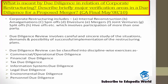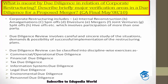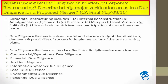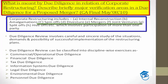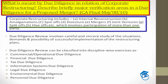Due diligence review involves a careful and sincere study of situations that determine the possibility of successful implementation of any restructuring plan. Corporate restructuring includes: internal reconstruction — where the company wants to reconstruct its business internally; amalgamation — one company gets amalgamated with another; spinoffs — a company prefers a larger company; divestiture — divesting major holdings; and mergers, joint ventures, split-offs, and hive-offs — all involving the participation of more than one party.